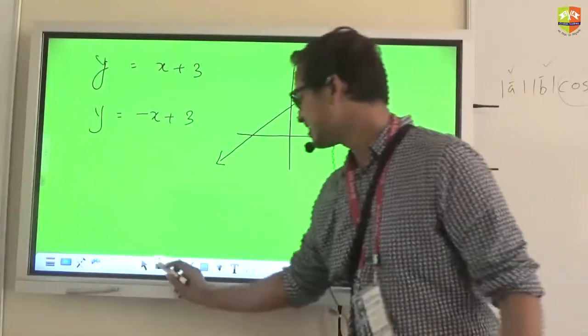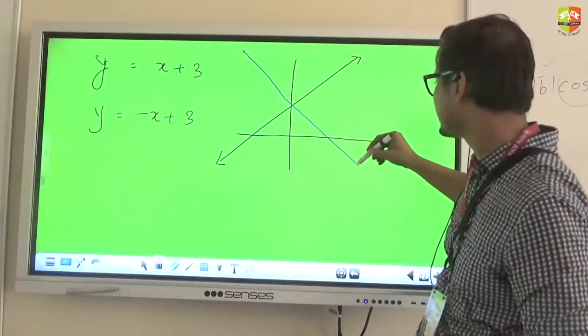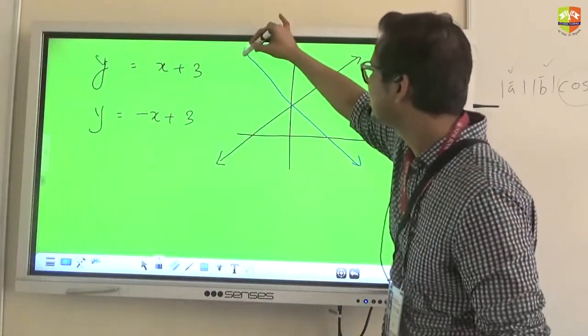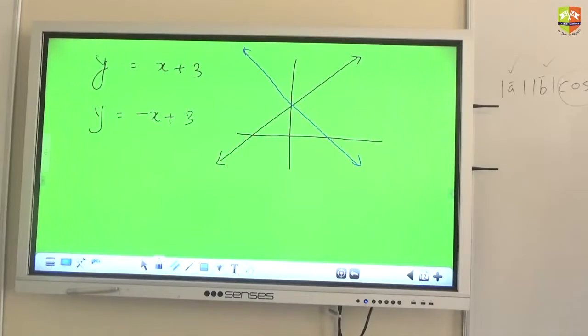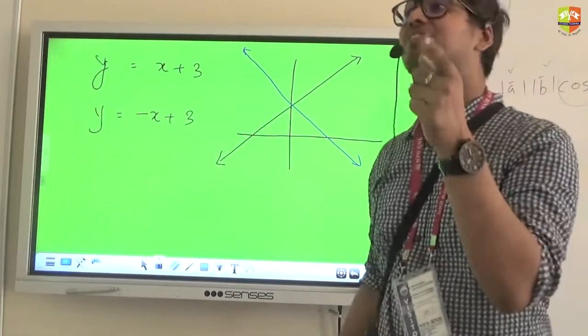So if you plot this, all of you can guess that the graph would actually look like this. Yes or no? So it has reflected about? It has reflected about Y axis.